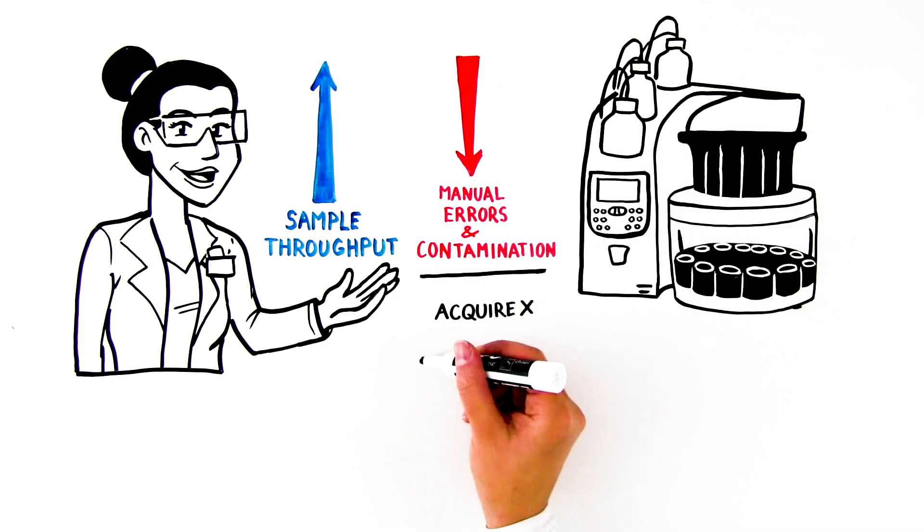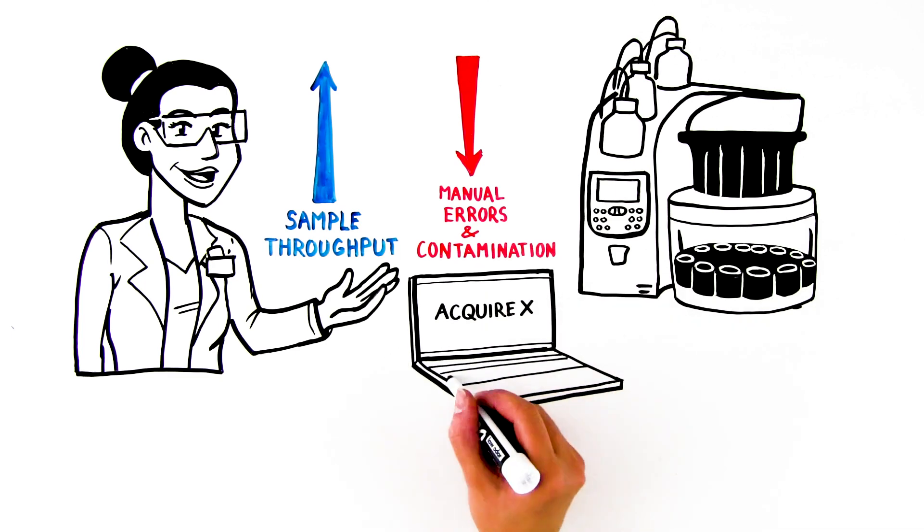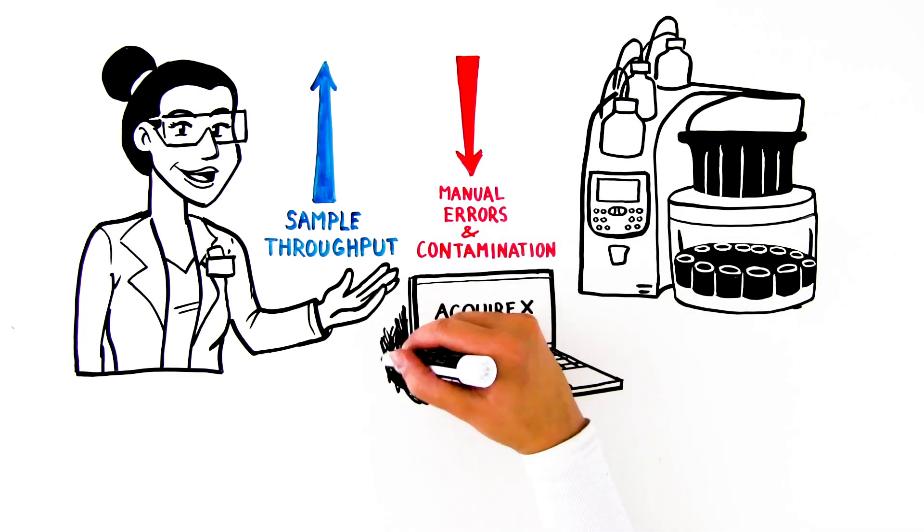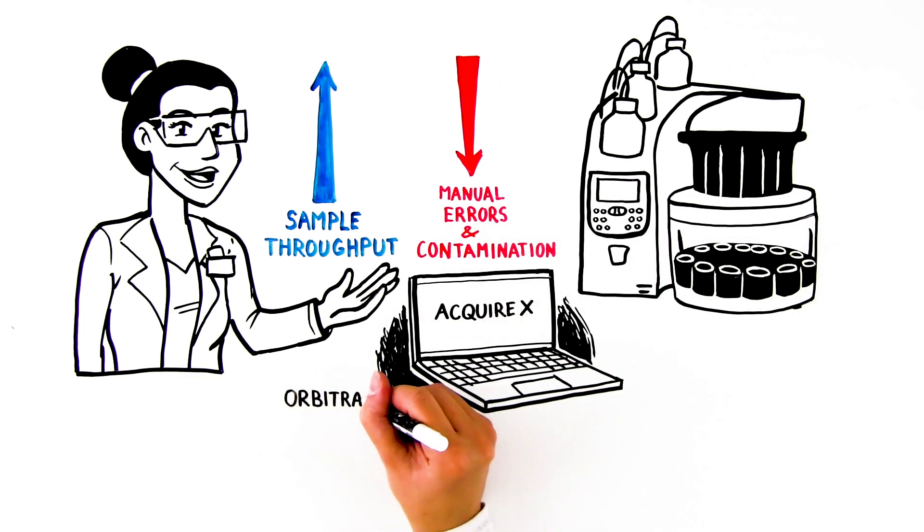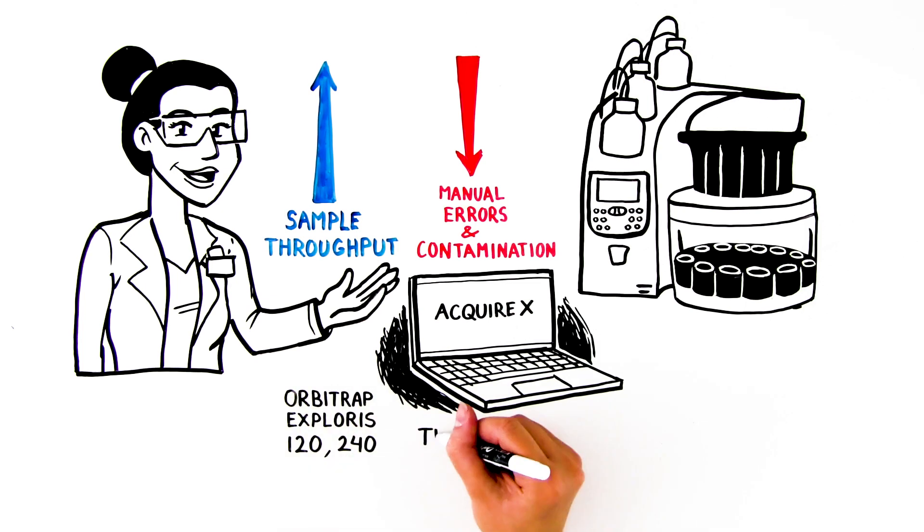AcquireX software also speeds up method development by automating procedural blank exclusion lists to be set up when using the Orbitrap Explorys 120, 240, or Tribrid Orbitrap MS, such as the IQX.